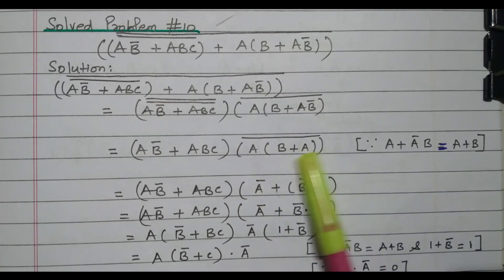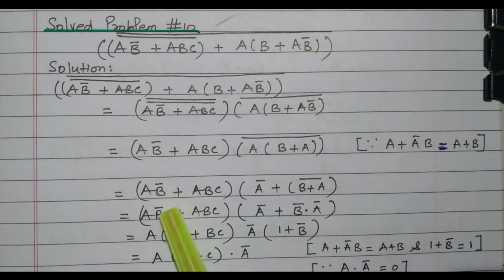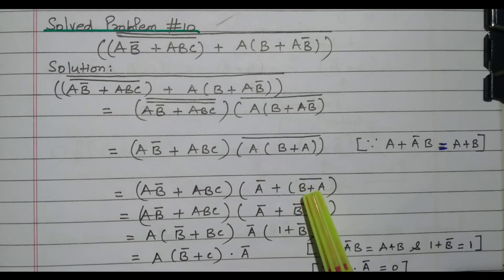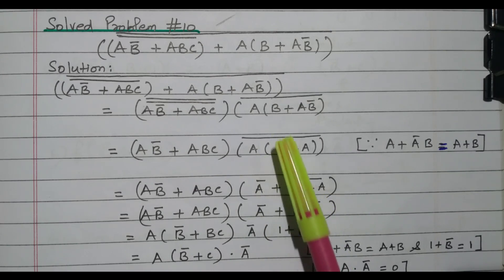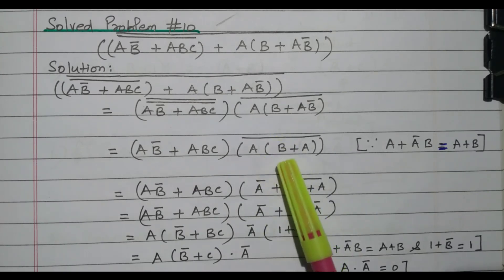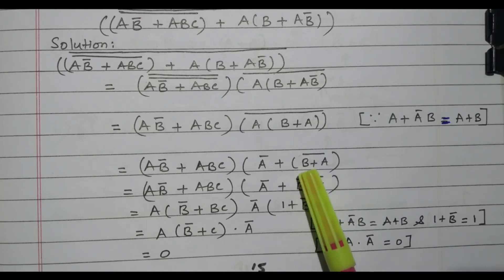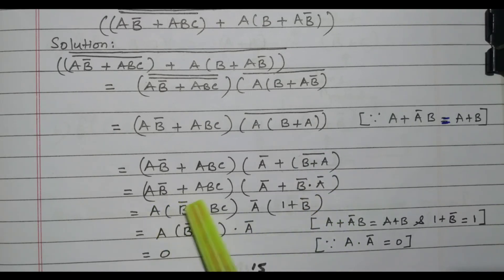Now for further simplification, the term is written as AB-bar plus ABC. Here we can apply the other De Morgan's theorem: A into B the whole bar equals A-bar plus B-bar, where B is now B plus A. So we get A-bar plus B plus A the whole bar. Applying De Morgan's theorem again, B plus A the whole bar equals B-bar dot A-bar. So we now have AB-bar plus ABC times A-bar plus B-bar dot A-bar.